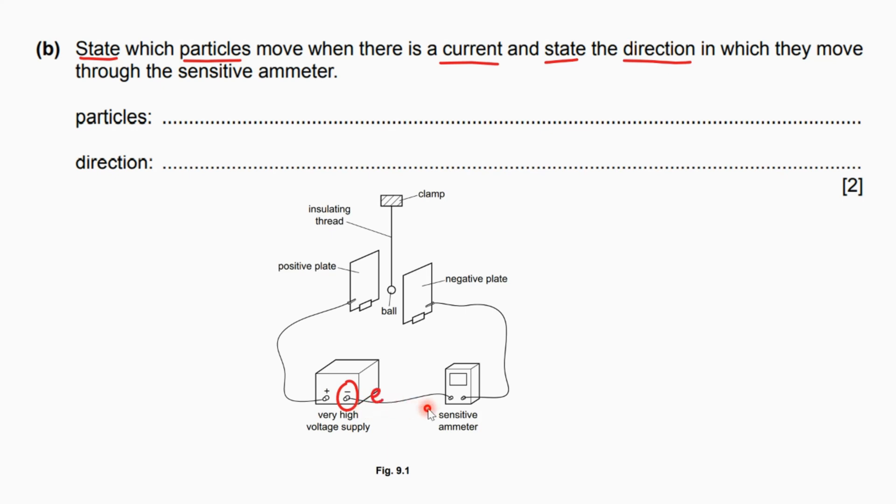The electrons, they go from the negative terminal here to the, if we complete this circuit as one complete circuit, there's no gap and they go through the sensitive ammeter like this. This is the track or the path taken by the electrons.